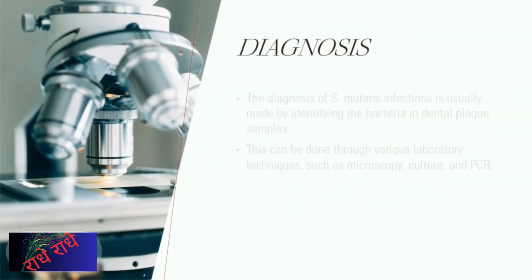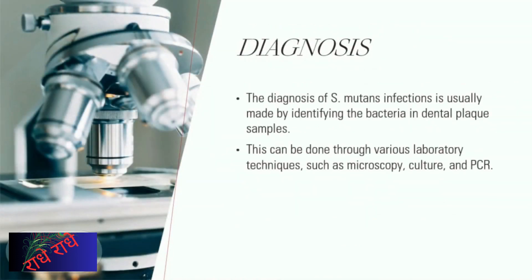Diagnosis of S. mutans infections is made by examining dental plaque samples under a microscope in a laboratory. Various methods are used in this process, such as microscopy, culture, and PCR. These tests can help verify the existence of S. mutans and also establish if it is the main cause of dental caries.